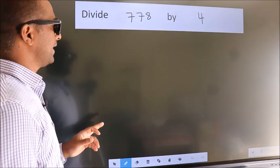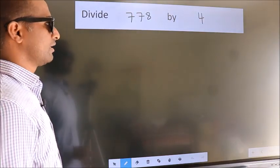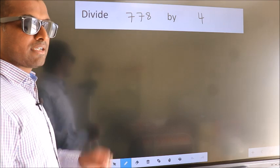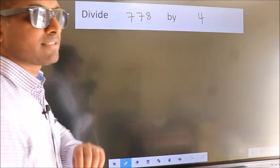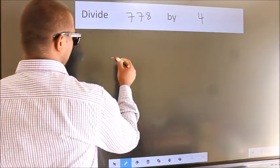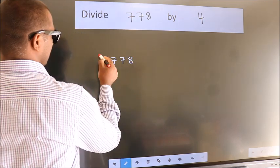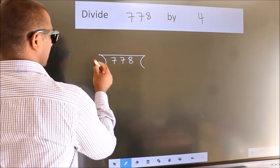Divide 778 by 4. To do this division, we should frame it in this way: 778 here, 4 here.